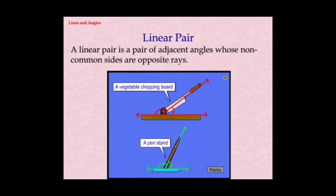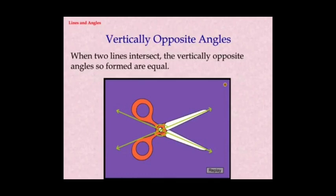A linear pair is a pair of adjacent angles whose non-common sides are opposite rays. The angles in a linear pair are supplementary. You may also recall vertically opposite angles, formed when two lines intersect each other. When two lines intersect, two pairs of opposite angles are formed — they are called vertically opposite angles and they are equal in measure.